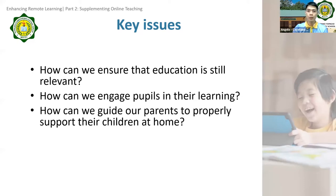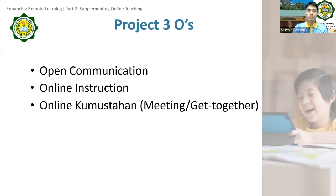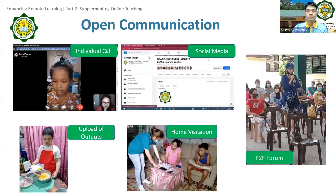The second O is online instruction. The context of our pupils last school year was that not all of them could attend online classes due to lack of gadgets and stable internet connectivity. We tried to maximize whatever gadgets were available, and through the help of our local government, some were given free internet access. But more than transmitting information, we wanted our pupils to feel the experience of a classroom — the only difference being that interaction between pupils and teachers happens virtually.